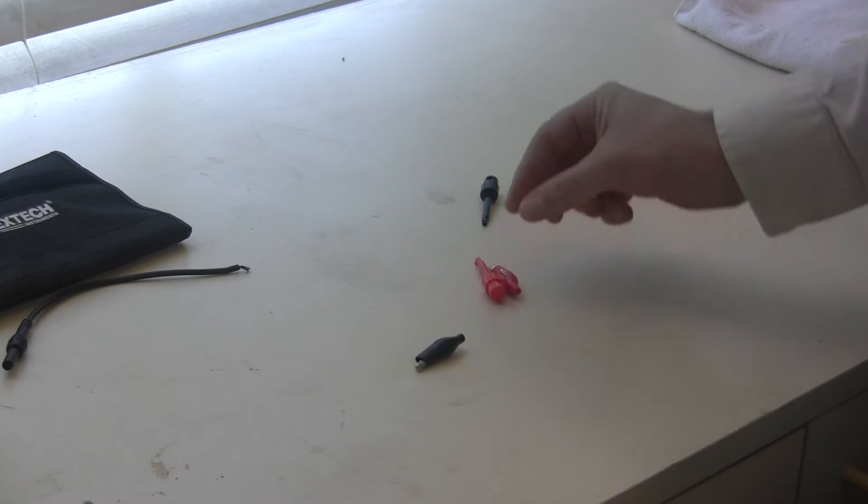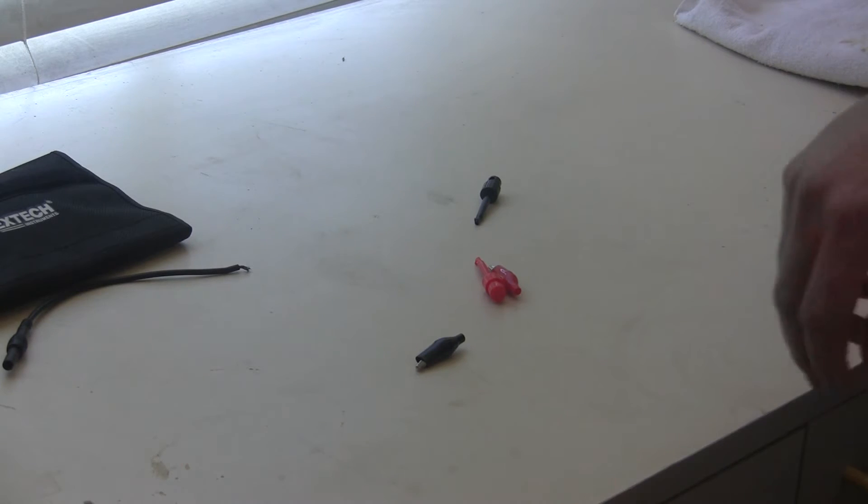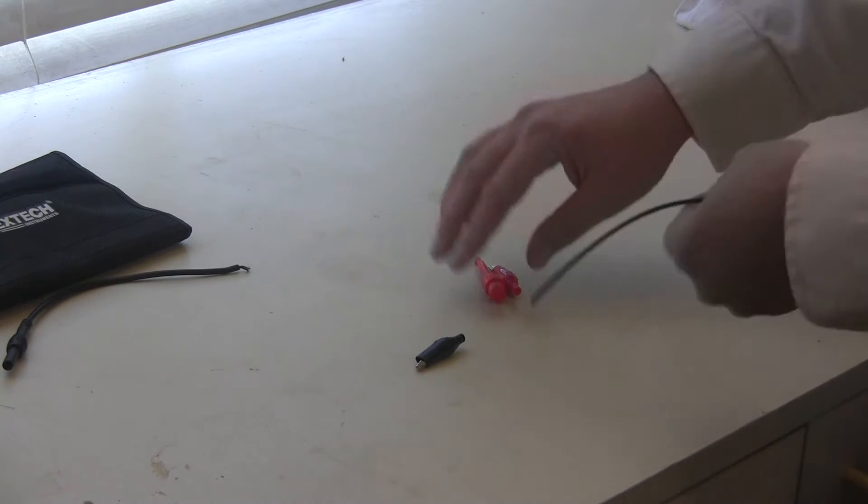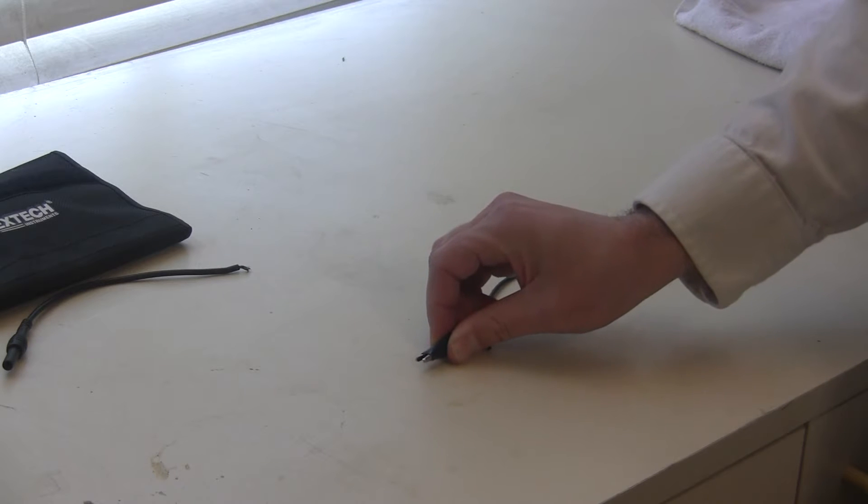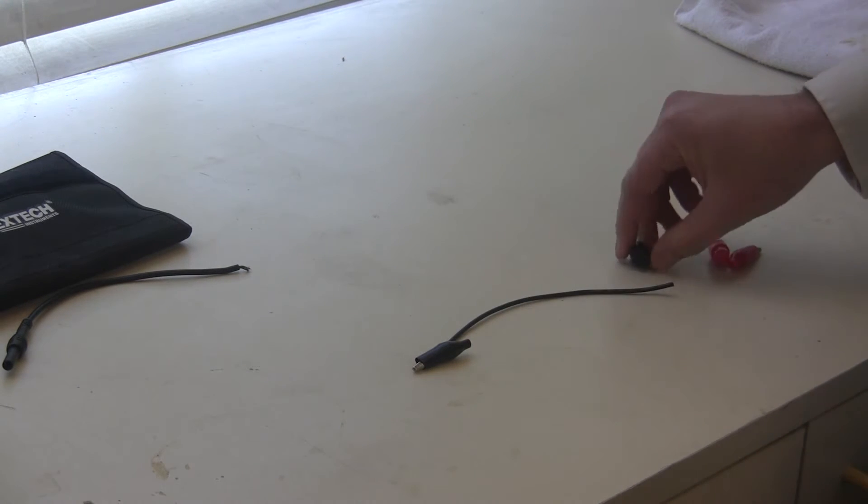And what I'm going to do is I'm going to connect a wire between them like this. And then this can clip on the regular lead of my multimeter.